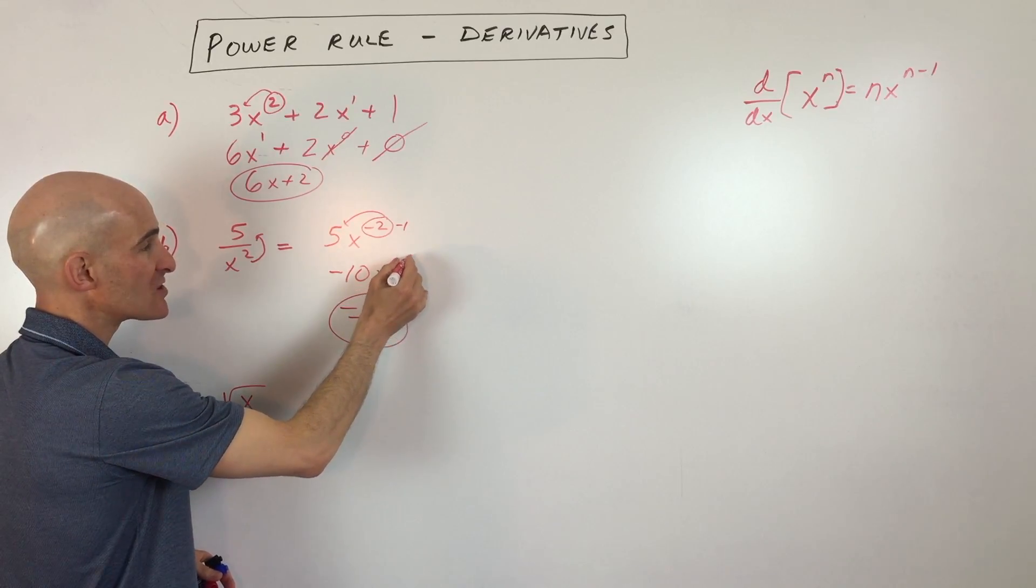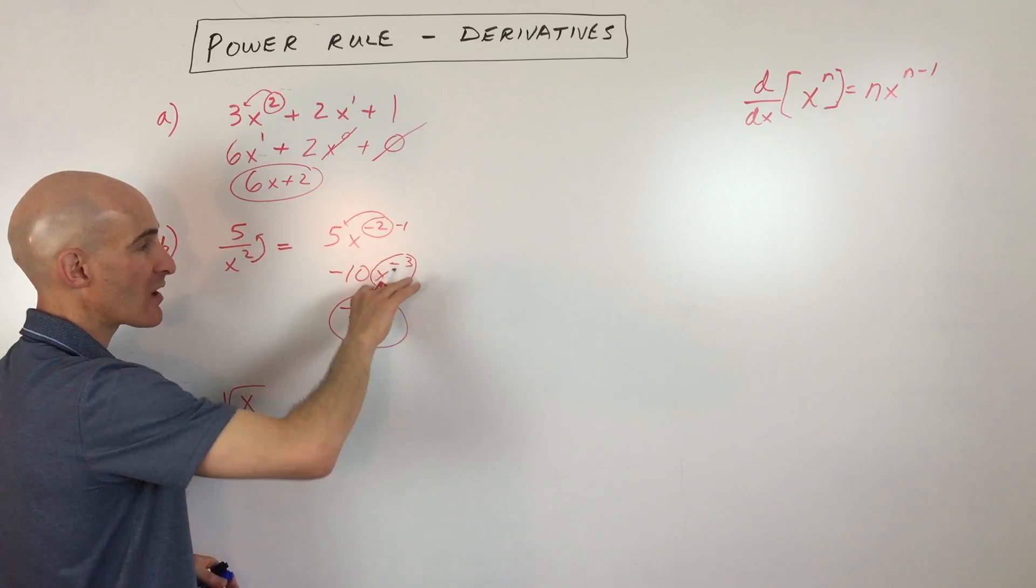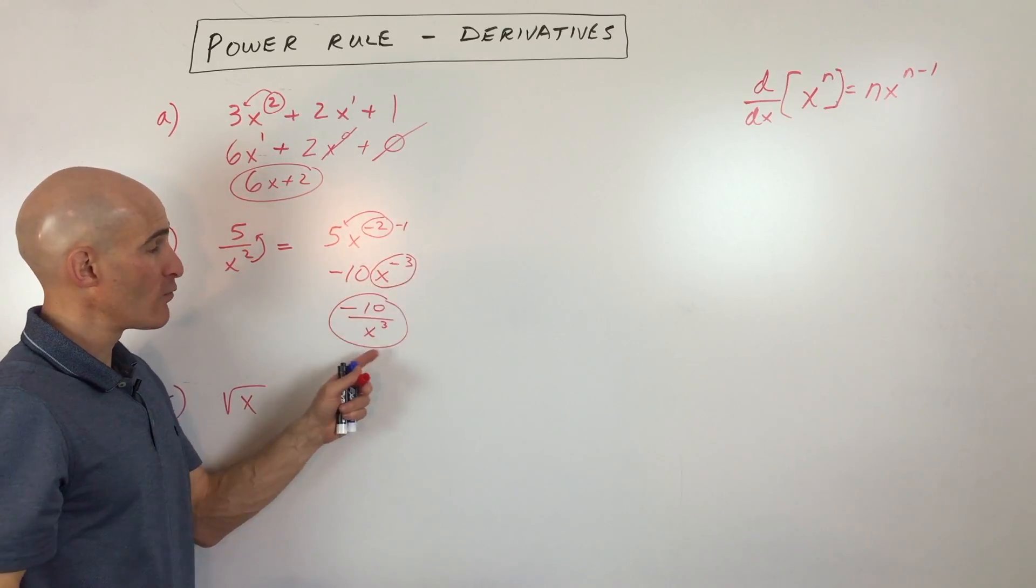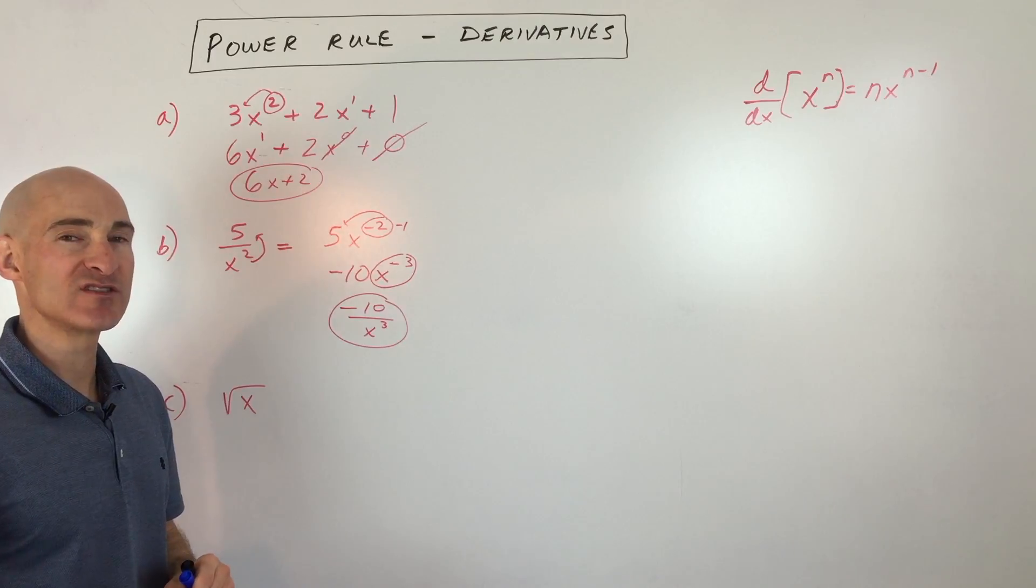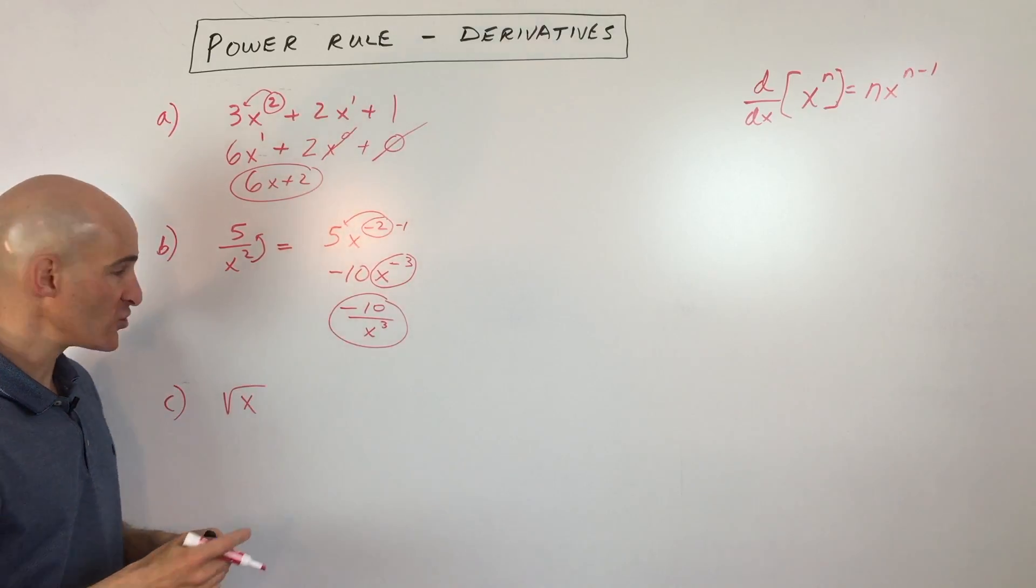So the negative exponent is just affecting the base x here, and we're taking the reciprocal, moving it back to the denominator. So you already know that from some of your previous classes, but just wanted to remind you about that.